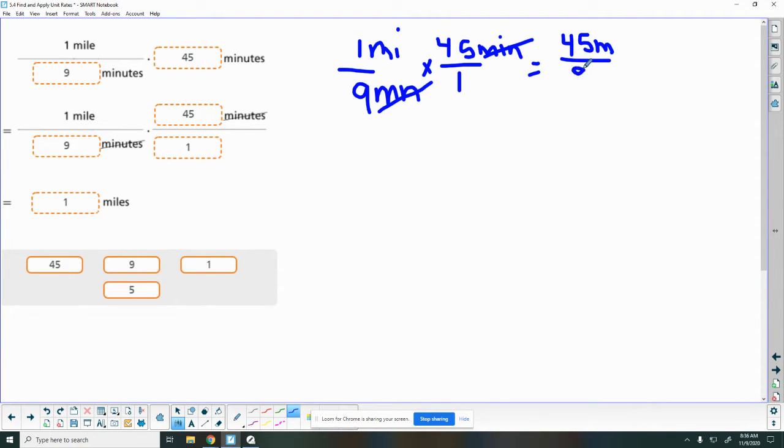9 times 1 was 9. 45 divided by 9 is 5. So it took 5 miles to go 45 minutes. And that just doesn't always make sense in my mind of what I'm doing and which way I am going. And I don't love when my labels don't match up.